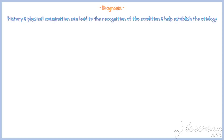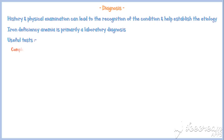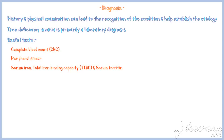Iron deficiency anemia is primarily a laboratory diagnosis, although history and physical examination can help recognize the condition and establish the etiology. Useful tests include complete blood count, peripheral smear, serum iron, total iron binding capacity, and serum ferritin levels.